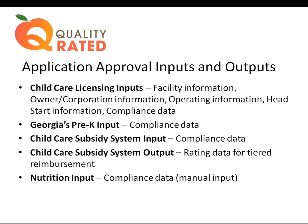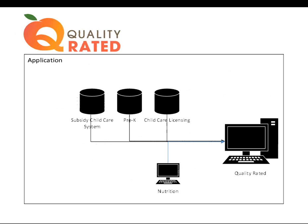Our subsidy data system also gives information regarding compliance and takes out of our system rating information — they pull rating data through a web service. Right now our nutrition input is manual, which is the one piece of the puzzle we still need to work on. Nutrition, which is housed at the department, does not use license numbers as their identifier for each of their programs, so we're working on that and are about 75% through with matching the right license numbers with the right nutrition providers.